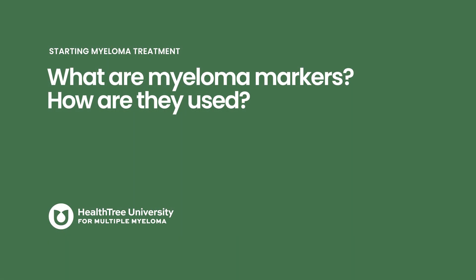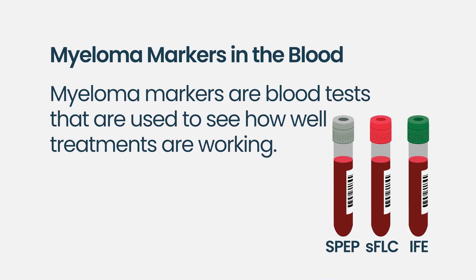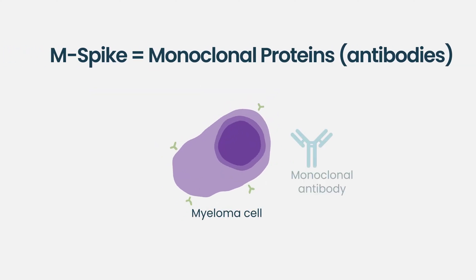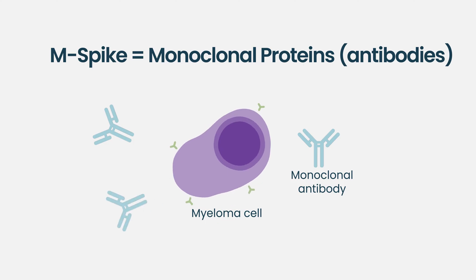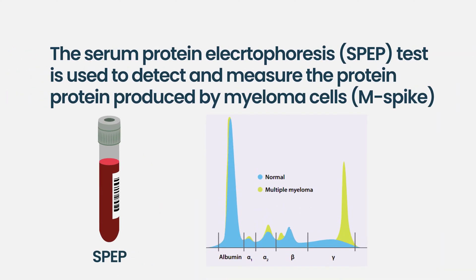What are myeloma markers and how are they used in multiple myeloma? We're fortunate to have a number of tests we can use in patients' blood to follow their disease and see how treatments are working. The one we classically use is called the M spike, or monoclonal protein — that is the protein the myeloma cells produce. We can detect it on a specific test called a protein electrophoresis, which gives us an exact quantification of the protein the myeloma cells are producing.